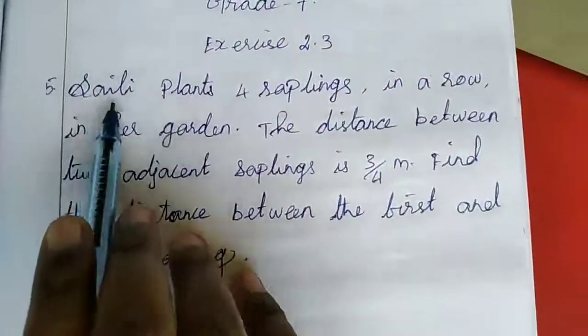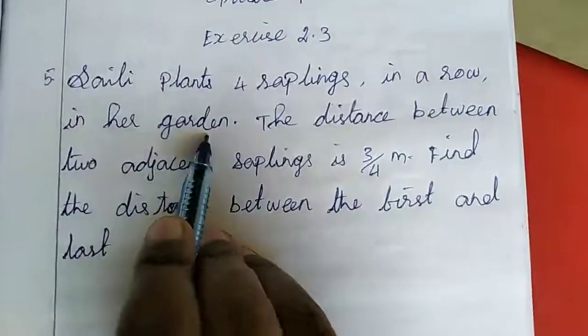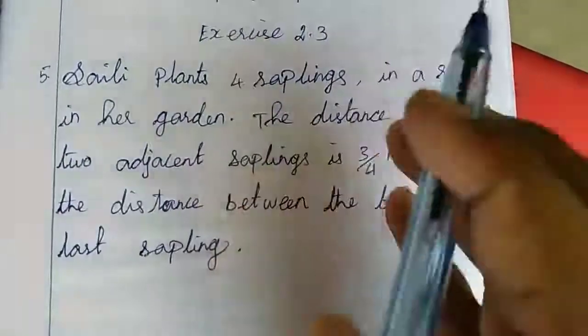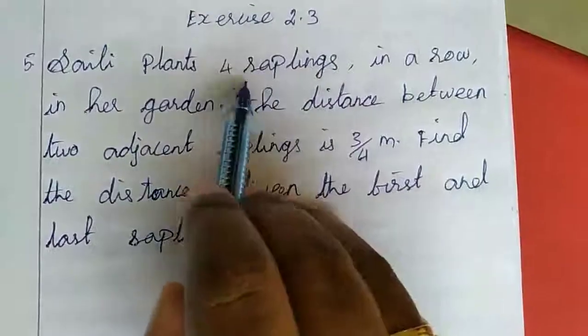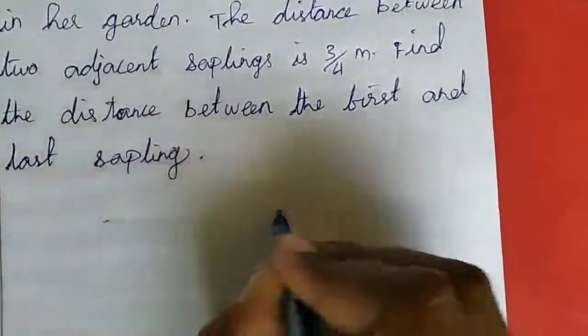The 5th sum is: Siley plants 4 saplings in a row in her garden.